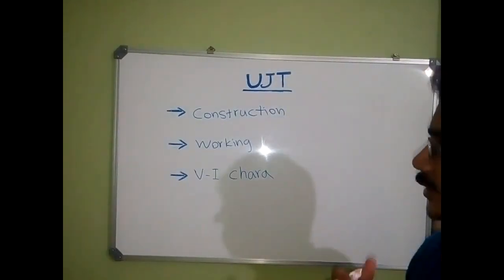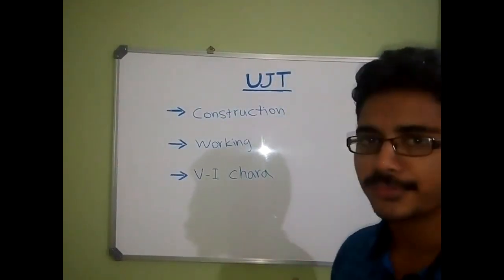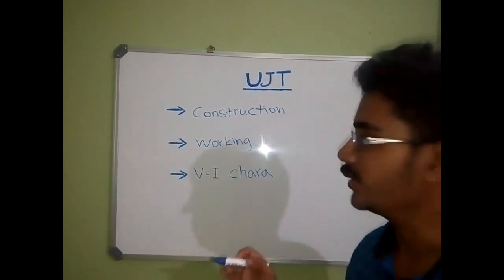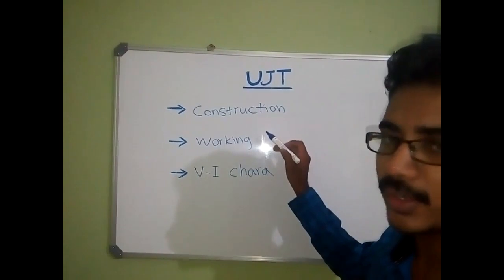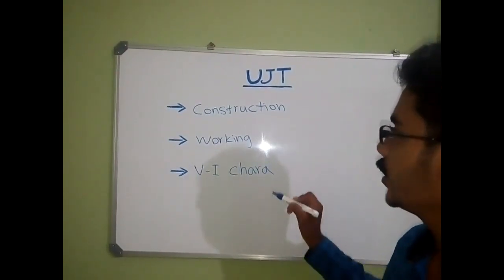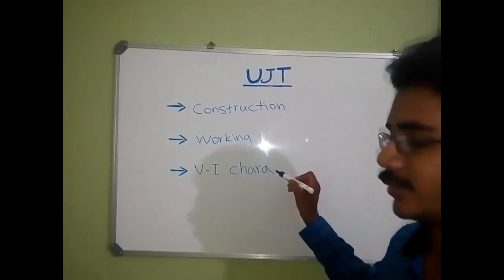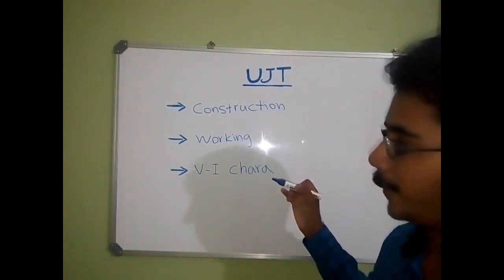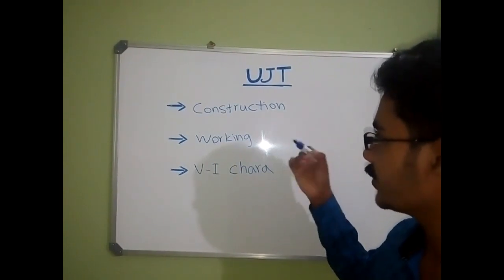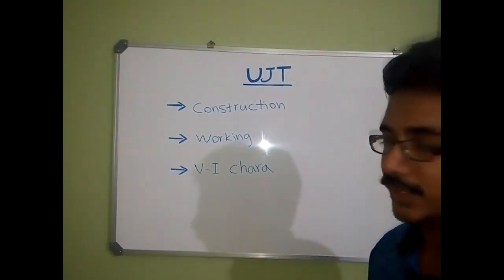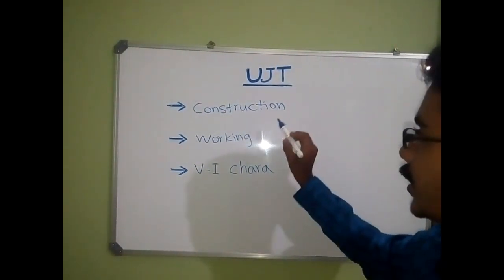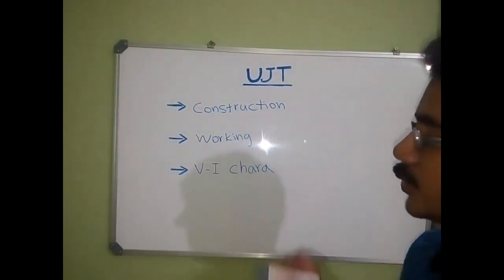UJT, or Unijunction Transistor, can be understood by examining three aspects: the construction of UJT, the working of UJT, and the VI characteristics of UJT. We will go into each of these and understand what a UJT is. First, we are going to consider the construction of UJT.